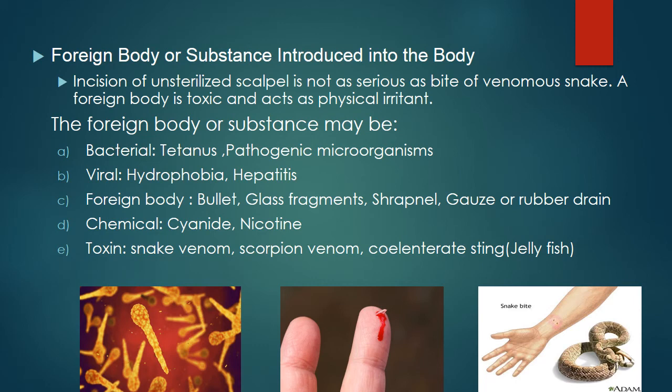The foreign body or substance may be bacterial like tetanus or pathogenic microorganism — for example, being hit by a rusty nail can cause tetanus. It can be viral like hydrophobia or hepatitis; a foreign body like bullet, glass fragments, shrapnel, gauze, or rubber drain; chemical like cyanide or nicotine; or toxin like snake venom, scorpion venom, coelenterate sting, or jellyfish.